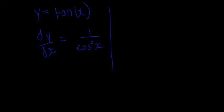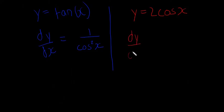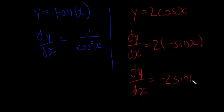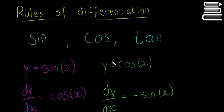One last point: if they say something like y is equal to 2 cos of x, then your dy/dx will just be equal to 2 multiplied by whatever your differentiation of cos of x is — which is minus sine of x — so that means dy/dx is just equal to minus 2 sine of x. That's all there is to differentiating trigonometric functions.